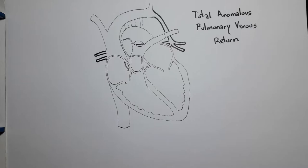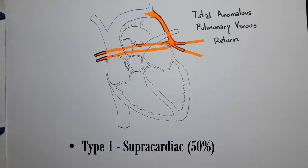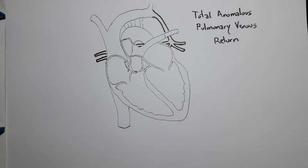Total anomalous pulmonary venous return is traditionally classified according to the site of pulmonary venous drainage. We have Type 1, the most common, with supracardiac connection or drainage, accounting for roughly 50% of cases, in which the pulmonary veins drain into a common vein and then into the superior vena cava or one of its tributaries.